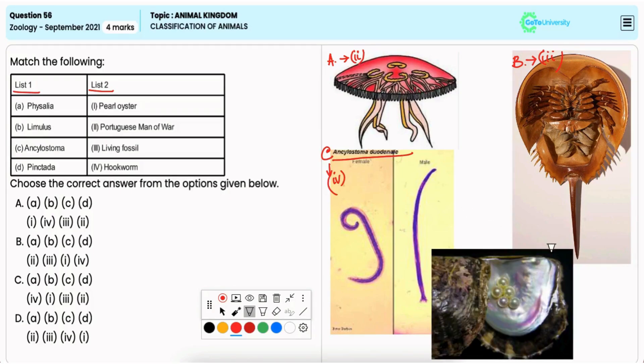known as pearl oyster, is a member of Mollusca. Thus D matches with 1.